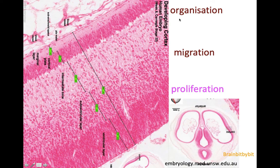You would think that with cortical dysplasia something is wrong with the organization, but in FCD type 2, there is already something wrong with the proliferation — with the stem cells. This explains why you have high signal all the way from the ventricle to the cortex, meaning the entire migratory tract is abnormal.